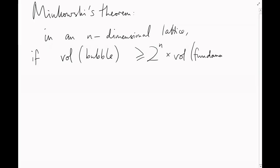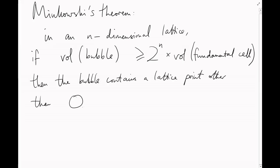This is Minkowski's theorem. In an n-dimensional lattice, if the volume of your bubble is more than 2 to the n times the volume of your fundamental cell, then the bubble must contain a lattice point other than the origin. This is a really simple, but surprisingly powerful tool. Let's see how we might have used it last video.